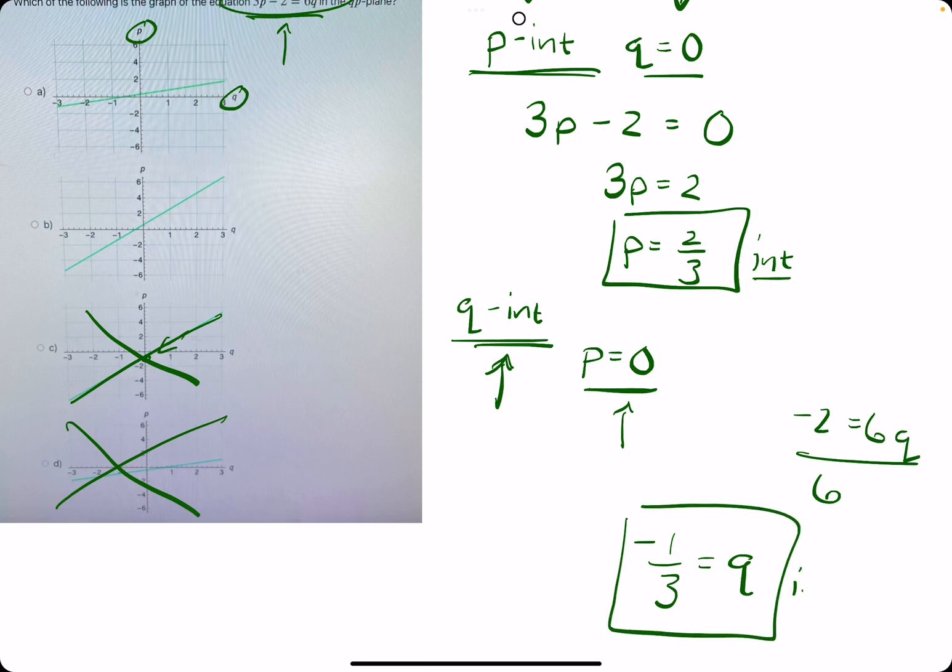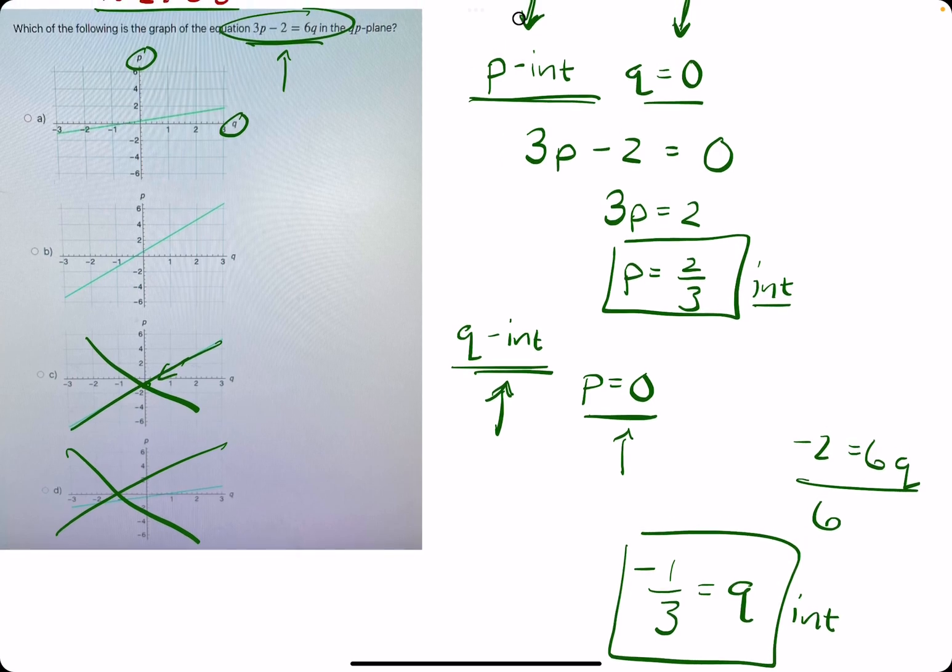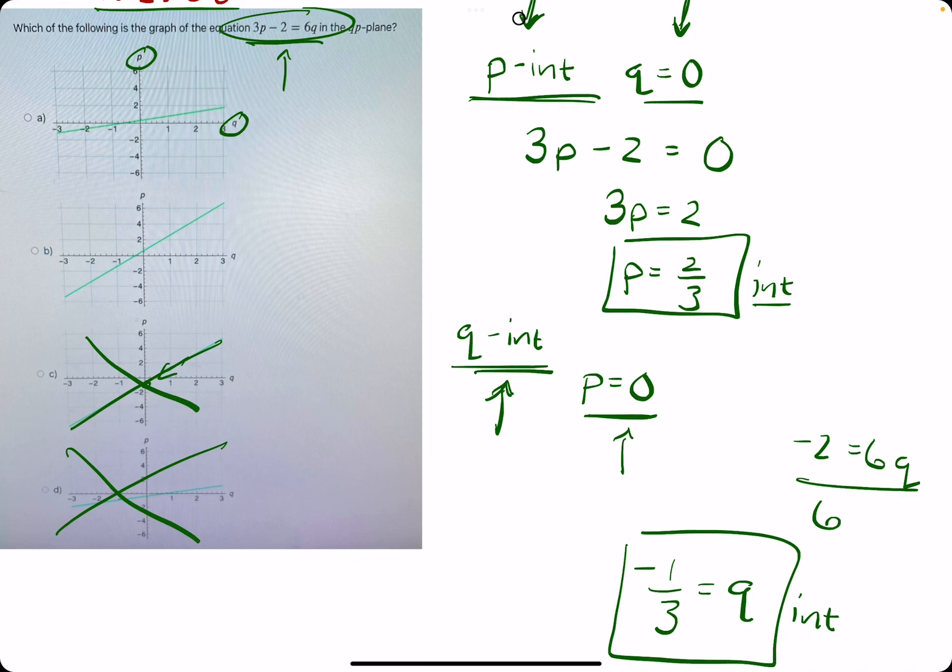This is our q-intercept. We're looking for the graph that has a p-intercept or y-intercept of 2/3, and a q-intercept or x-intercept of negative 1/3.